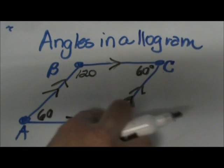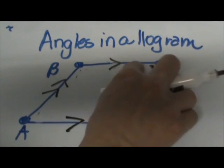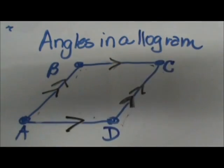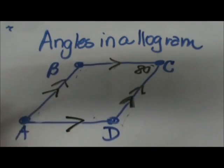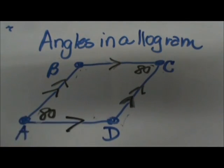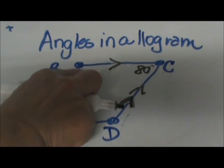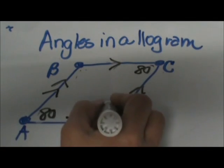Let's try a practice problem. Let's change these numbers. Let's say that angle C up here is 80 degrees. We can figure out the other three angles. What do we know about angle A? Angle A would also have to be 80 degrees and then angle D and B would have to be supplementary to 80 which means they each have to be 100 degrees.